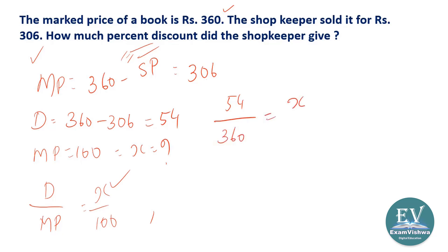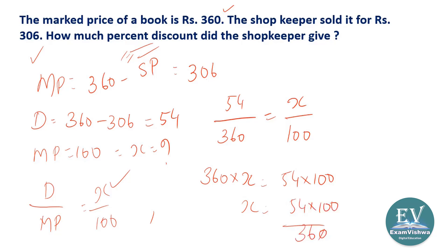So we write: 360 into X equals 54 into 100. X equals 54 into 100 upon 360. Cancel the zero — 54 upon 36 simplifies: 6 into 9 equals 54, 6 into 6 equals 36, giving 9 upon 6, then 90 upon 6, which equals 15. So if the market price is 100, the discount is 15 rupees — that means discount percentage is 15 percent.